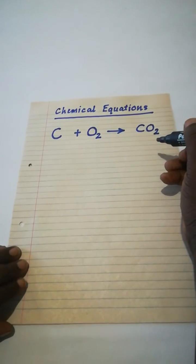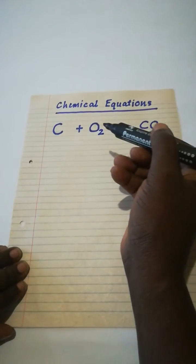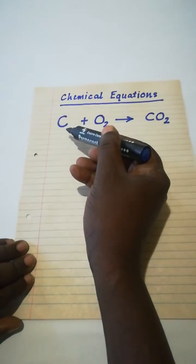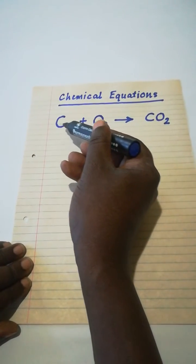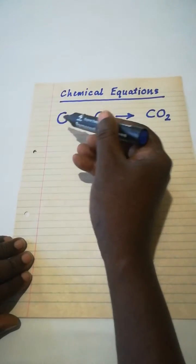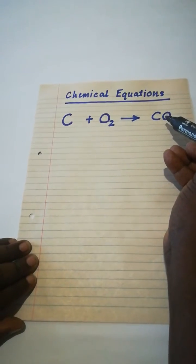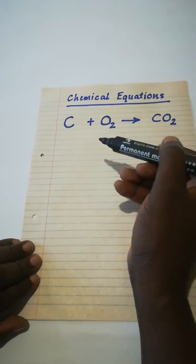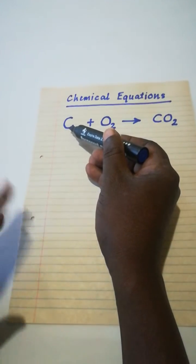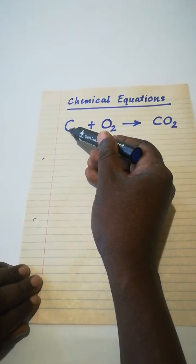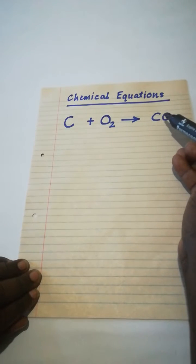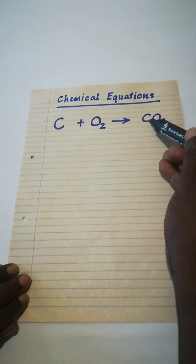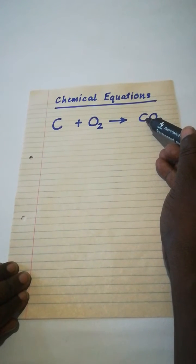Now, we must ensure that the number of atoms of each element on both sides of the equation are equal. For example, carbon on our left is 1, carbon on the right is 1. We say carbon atoms are balanced.